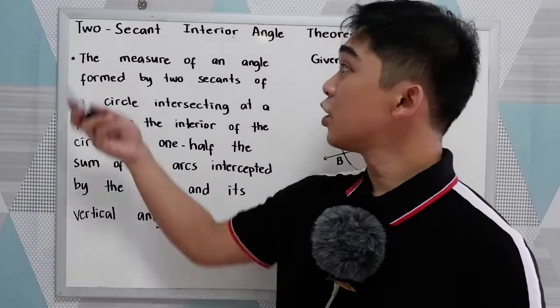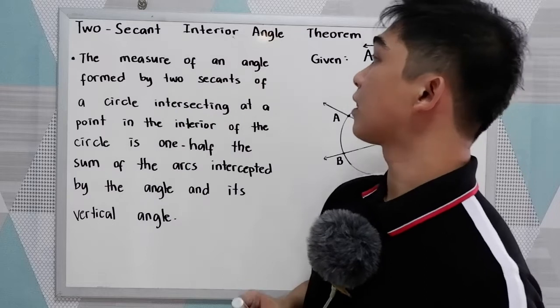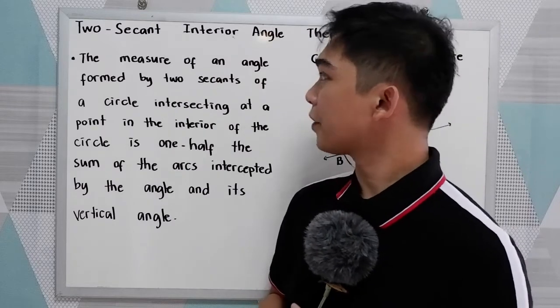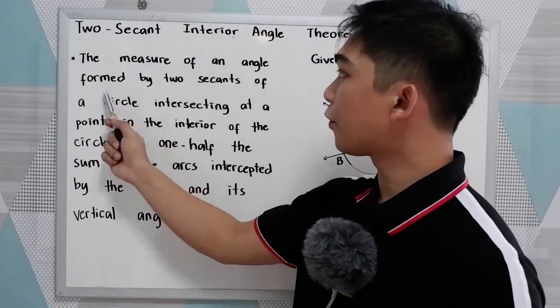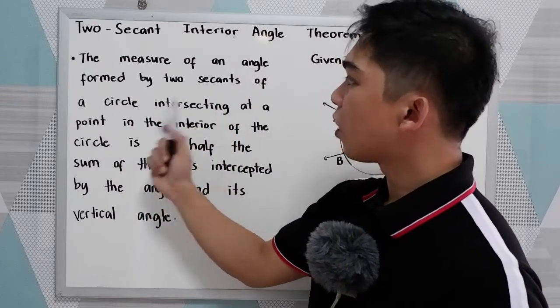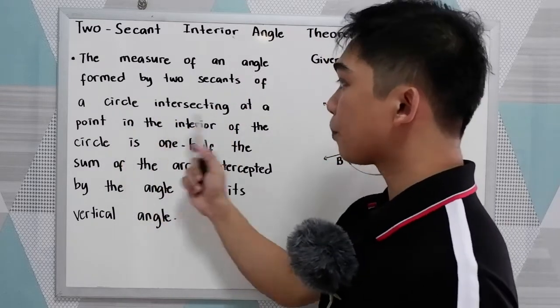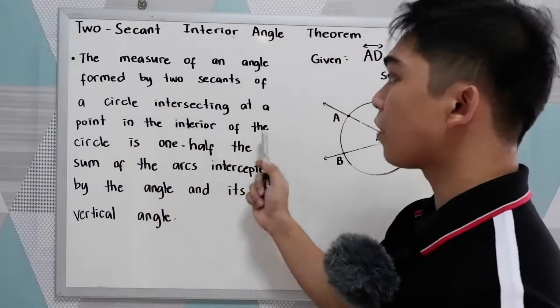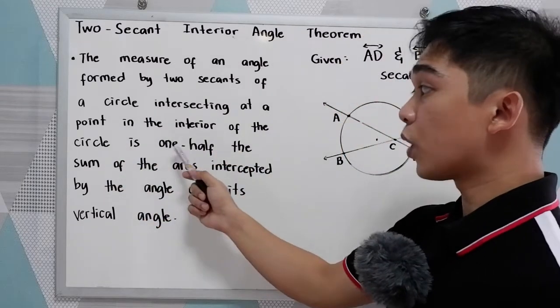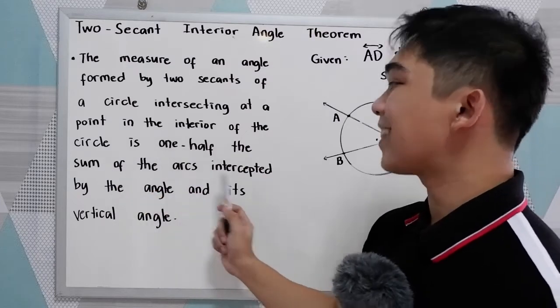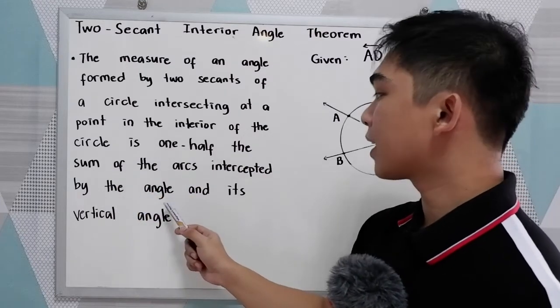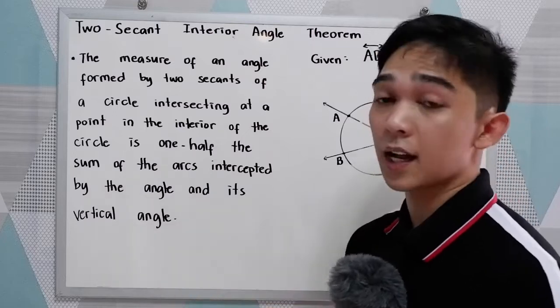We have the second one, two-secant interior angle theorem. In our theorem, the measure of an angle formed by two secants of a circle intersecting at a point in the interior of the circle is one-half the sum of the arcs intercepted by the angle and its vertical angle.